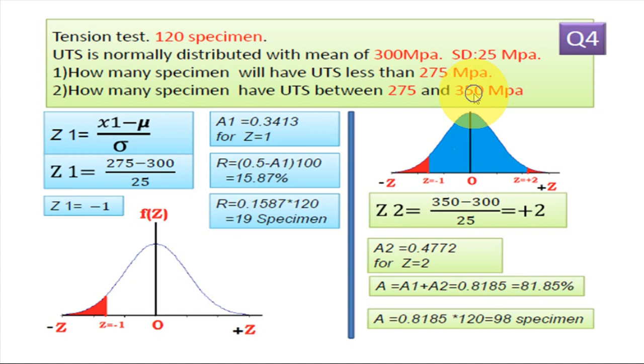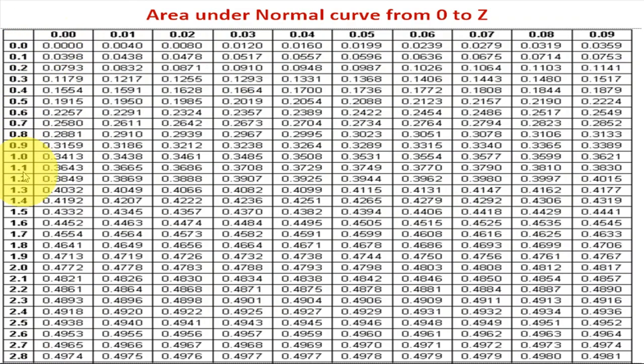Now second, x2 equal to 350. So we find out z2 equal to x2 minus mu by sigma. X2 equal to 350 minus mu value 300 upon standard deviation 25. So it comes 2, plus 2. Now we find out area from 0 to z2. So with help of chart our z is 2. So for 2, how much is area? 0.4772.